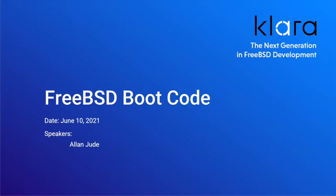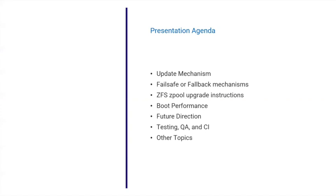The goal today is to talk about the current status of the boot code, where some of the weak points are, figure out how to solve those, and where else we want to go with the boot code and how we want to improve it over the near term and the long term. The first topic is the update mechanism for the boot code. Now that we've moved to having the ESP actually mounted in FreeBSD 13, that makes updating it less of a manual affair.